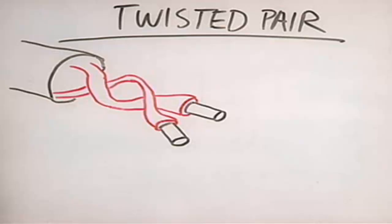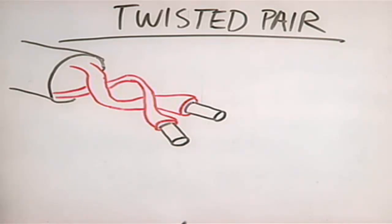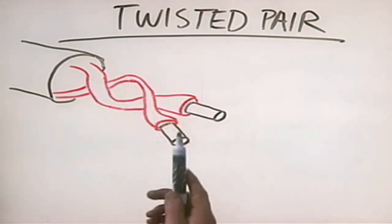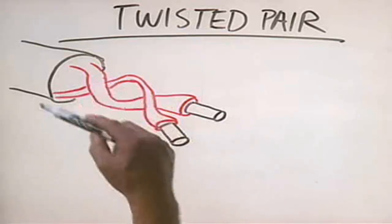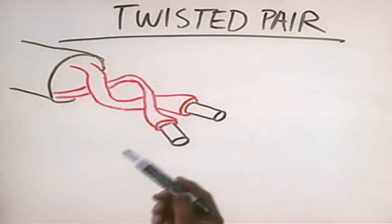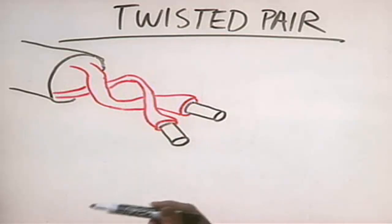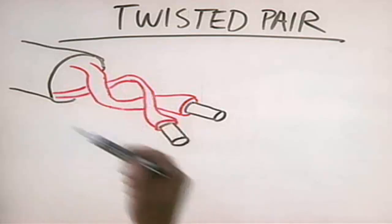What you really will be working with is twisted pair cabling. Twisted pair cabling is similar to the type of wiring used for your telephone system. It's very widely implemented today and is supported by a wide variety of networking standards such as Ethernet and token ring. Twisted pair cabling is composed of pairs of copper wiring. In actuality, the twisted pair cabling you'll work with has four pairs, or eight different wires, but for simplicity we're showing two.